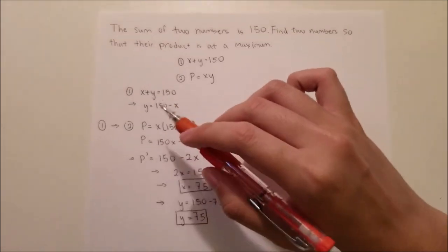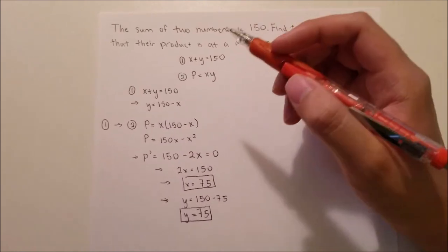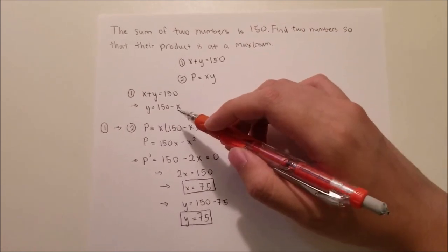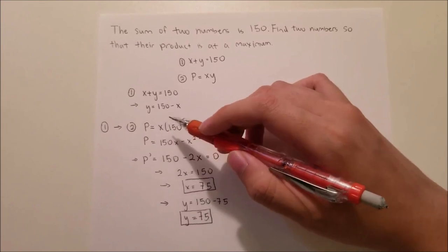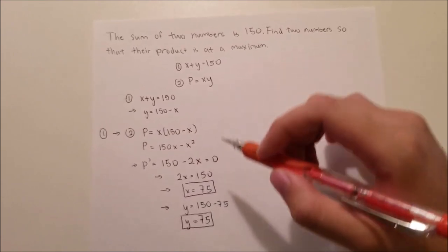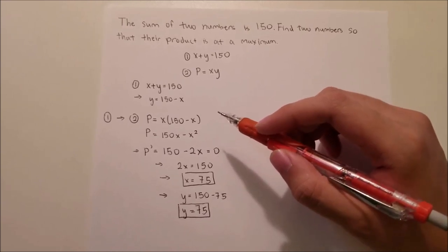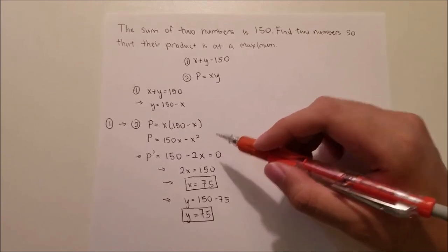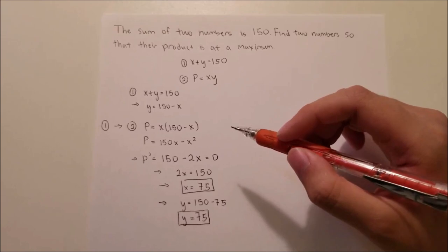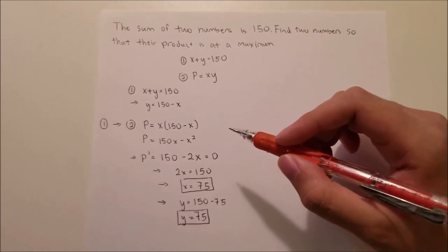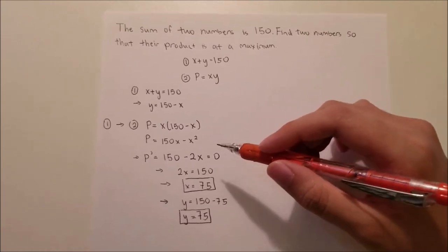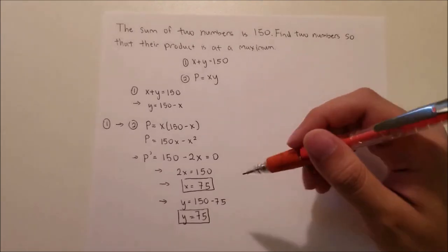So first, we'll do some simple algebra. We have x plus y equals 150. We'll isolate the y to equal 150 minus x and we'll plug it back into the function for p. So we get p equals x times quantity 150 minus x which comes out to p equals 150x minus x squared.